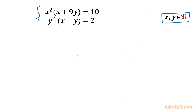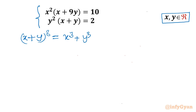If you notice both equations, the first has an x³ term and an x²y term, and the second has a y³ term and an xy² term. This is recalling one identity — if we write the (x + y)³ formula, we get a³ + b³ + 3a²b + 3ab². This formula we know.